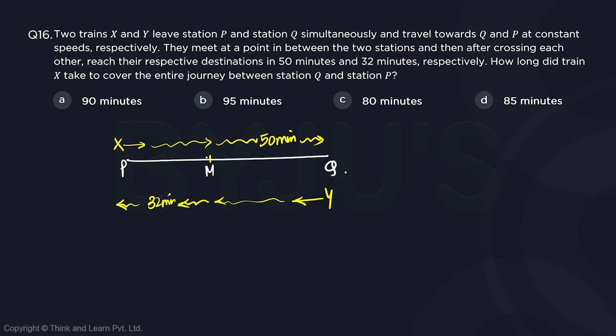So definitely they did not meet at the center because if they would have met at the midpoint or they are at the centermost point, then they would have taken equal time to cover the remaining distance. Since the time takens are different, that means X is moving slower.